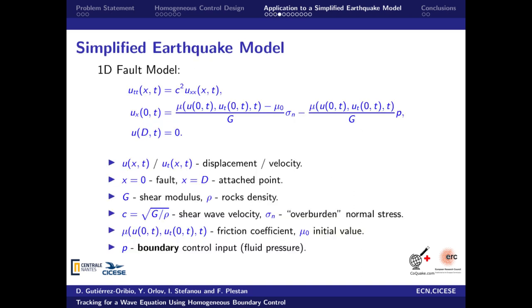A simplified fault model is represented as a 1D wave equation. Again, the states are U as displacement and UT as velocity. X is the space variable and can take values from 0 to d. The fault is located at x equal to 0.